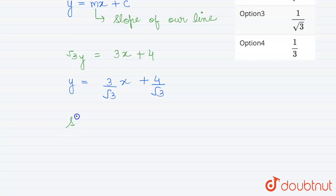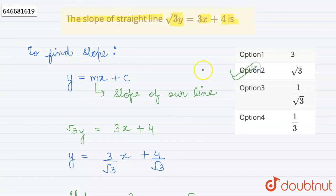From this we get our slope as 3 by root 3 which is root 3. Therefore, option 2 is our correct answer.